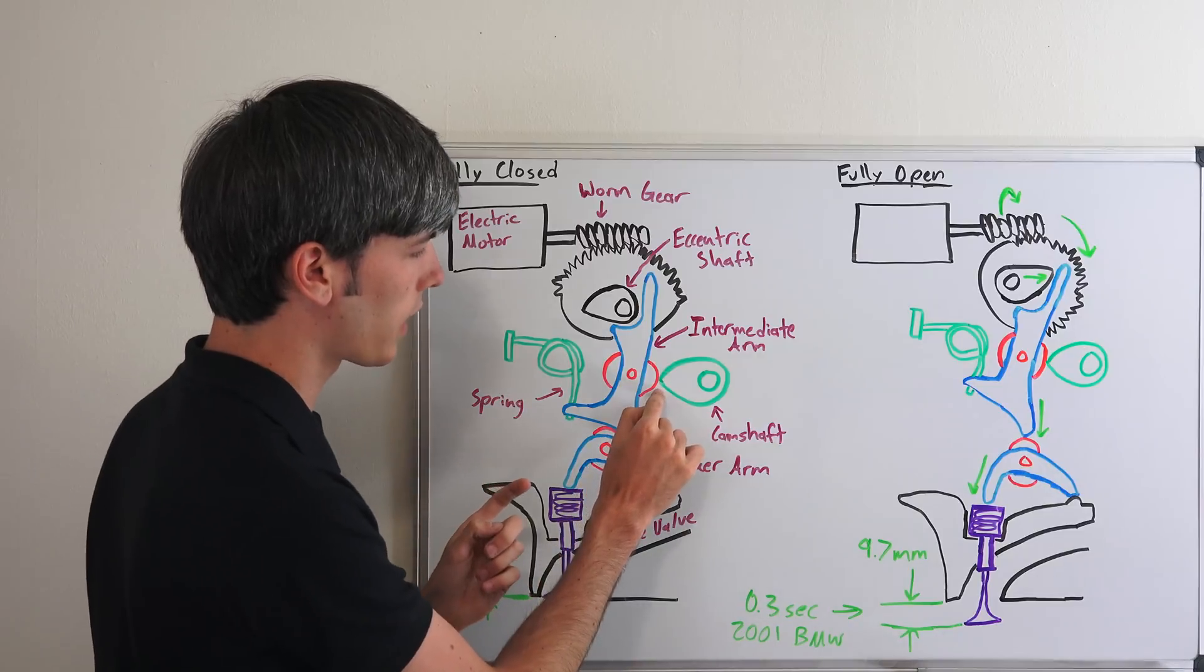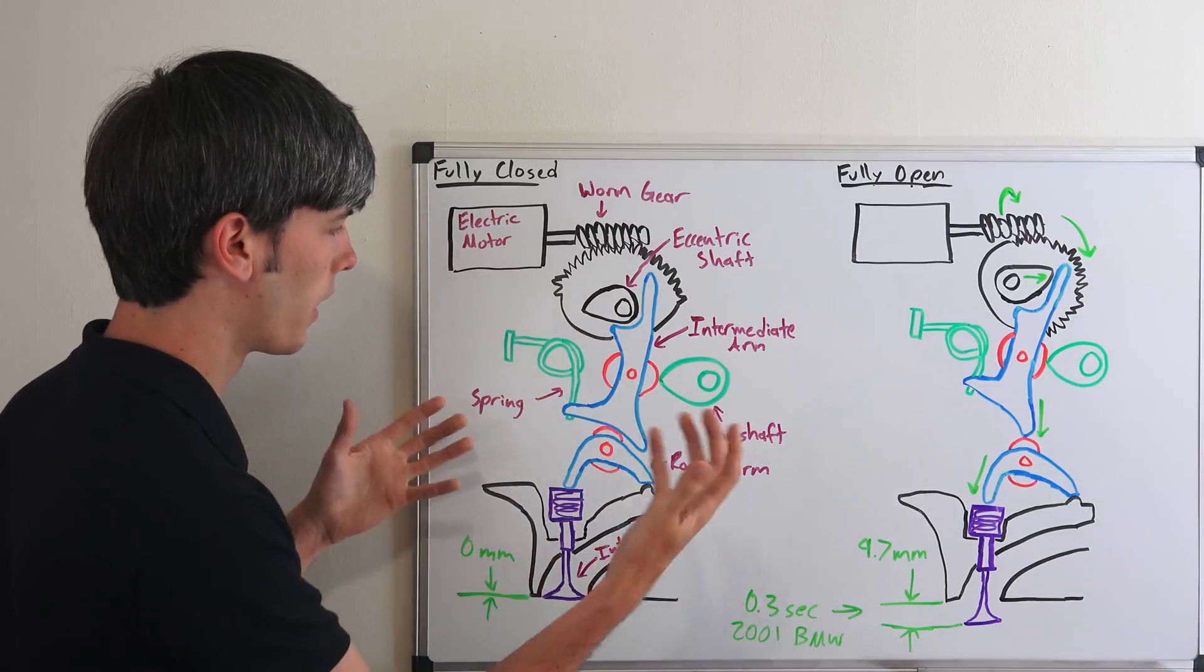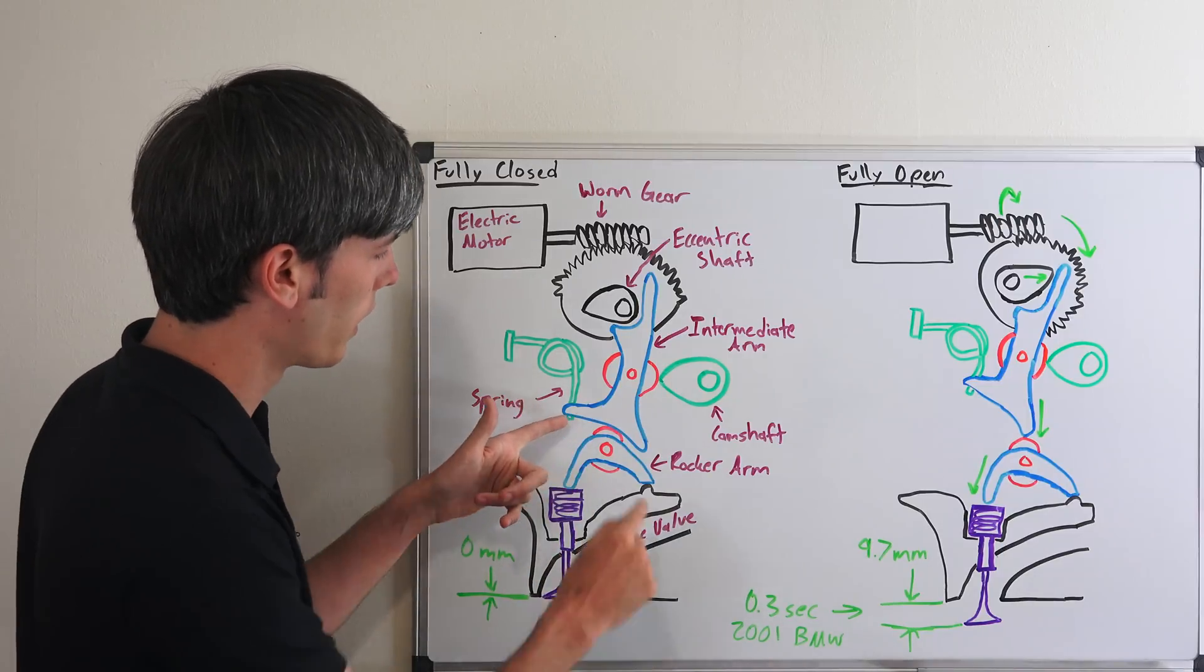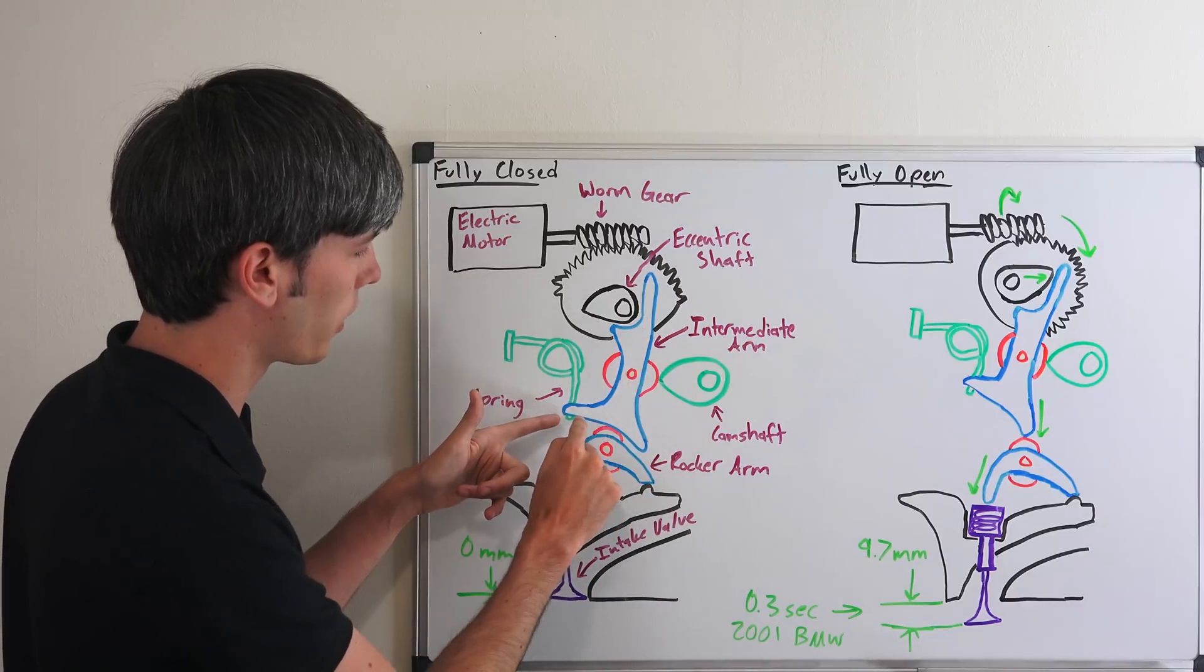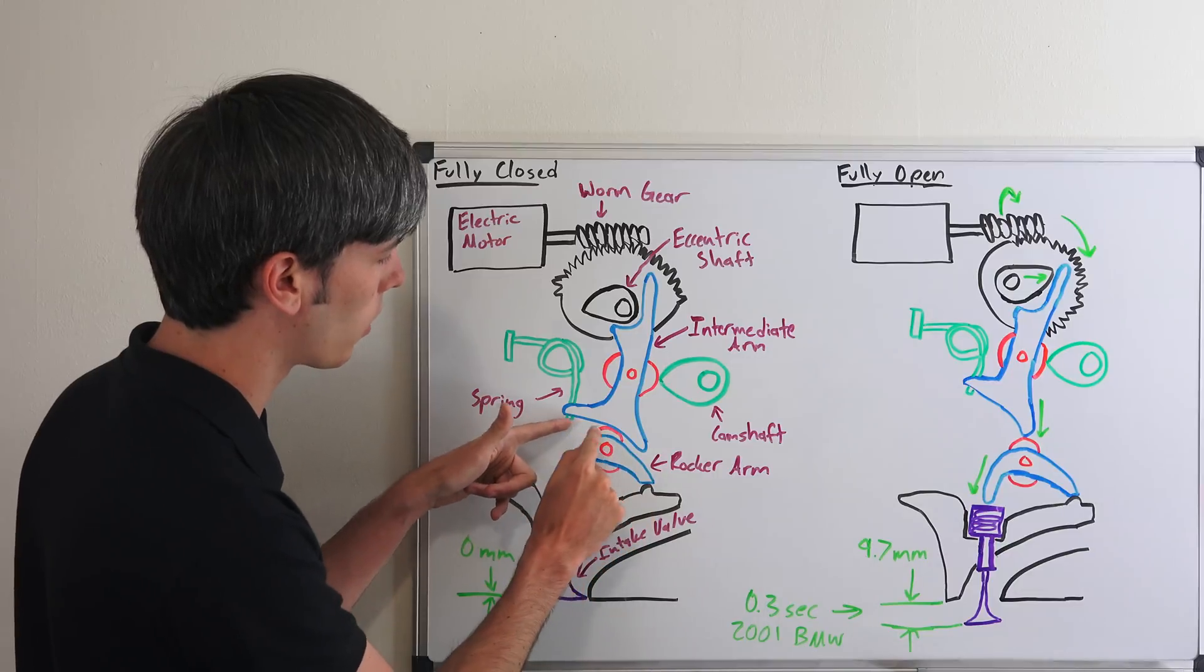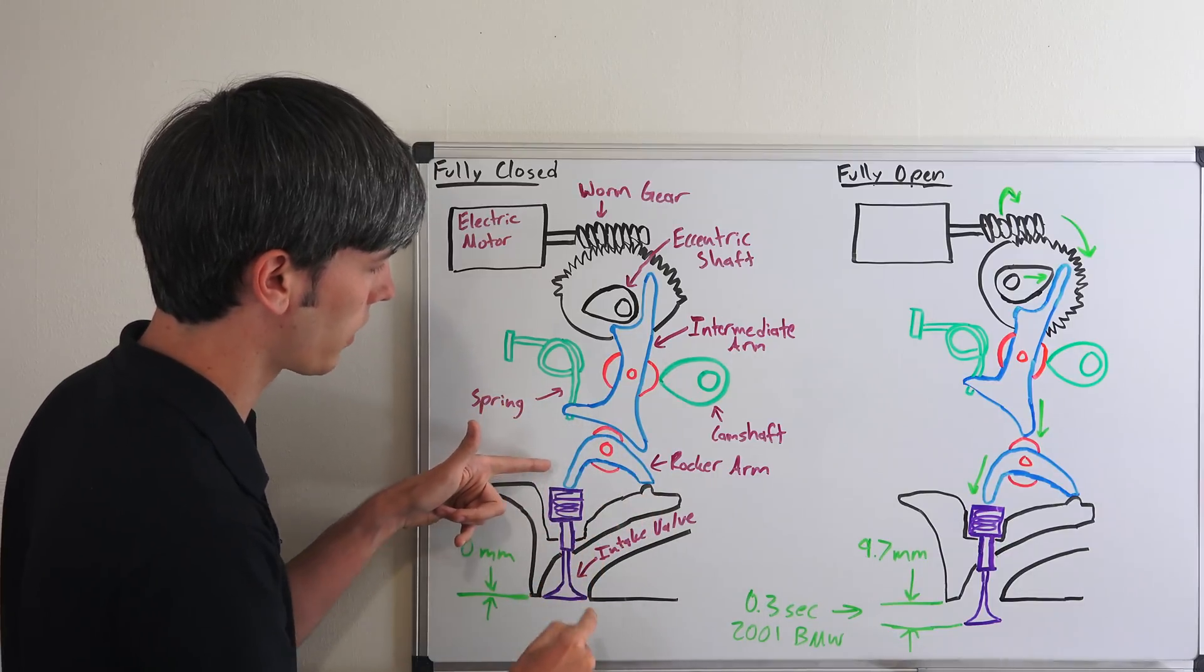As you can see, the cam is at its highest point on its lobe right here, so in any traditional engine the intake valve should be fully open, but as you can see, it's still closed. The reason for that is because this intermediate arm in the middle has this long flat portion. As long as this rocker arm is on this flat portion, it's not going to be acting on the intake valve at all.